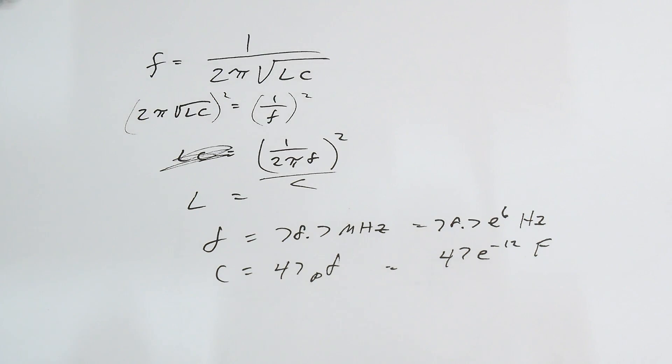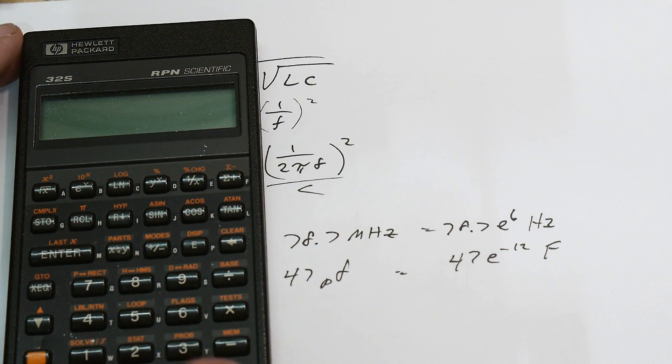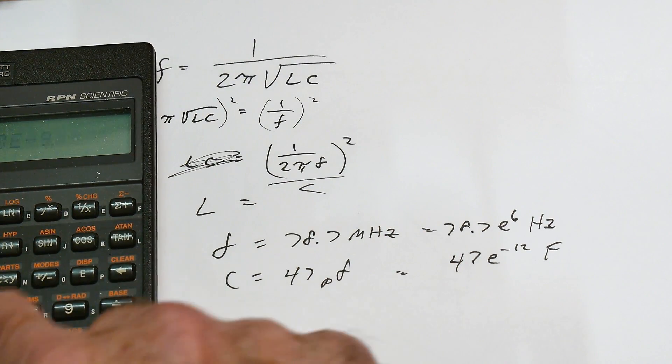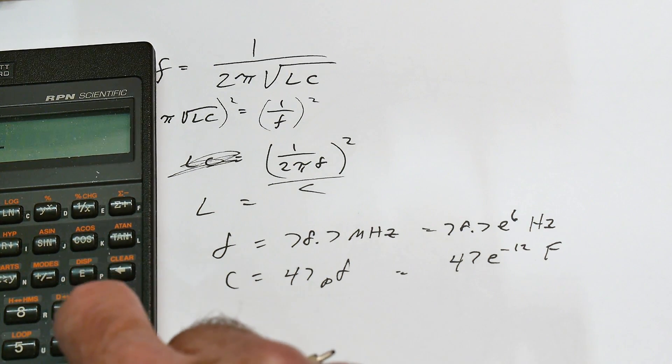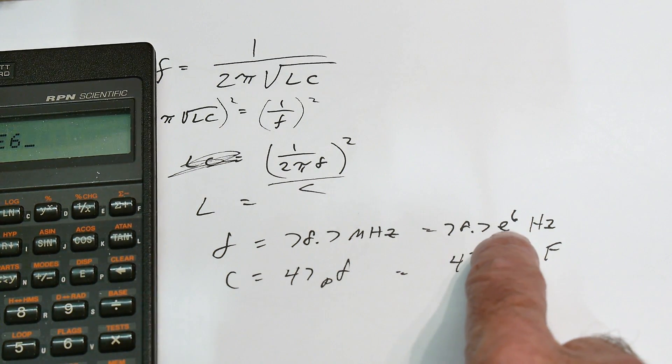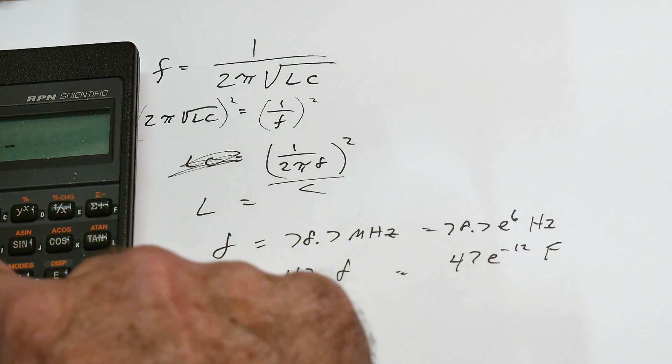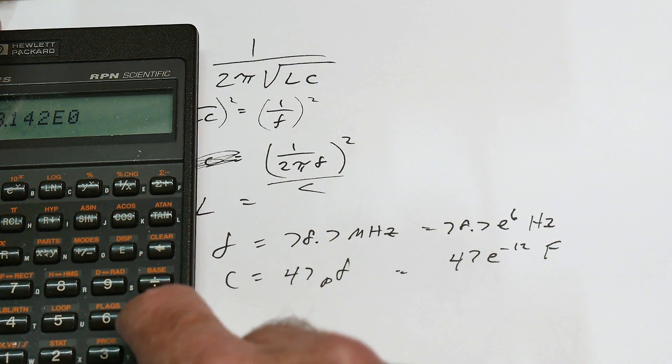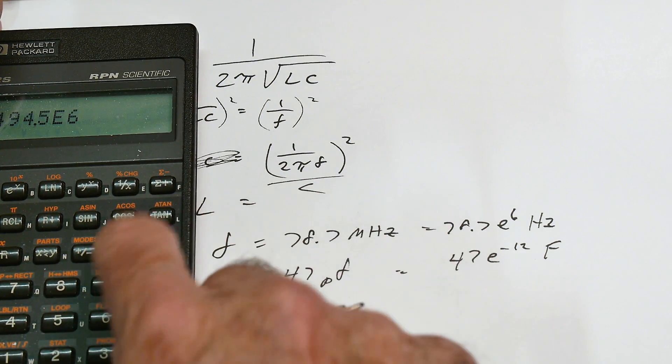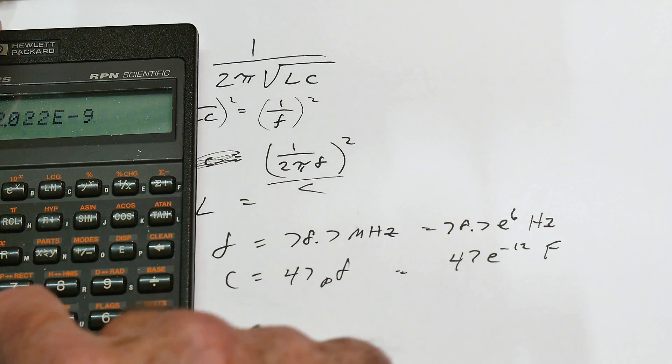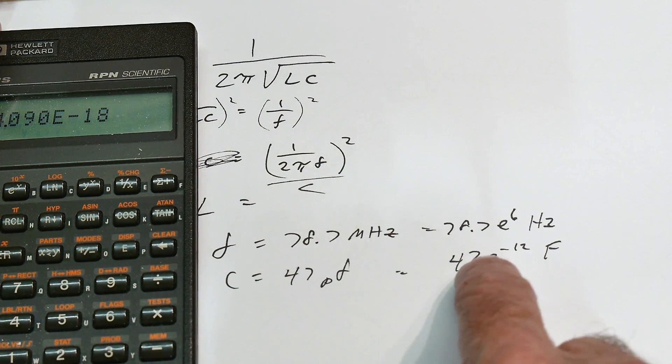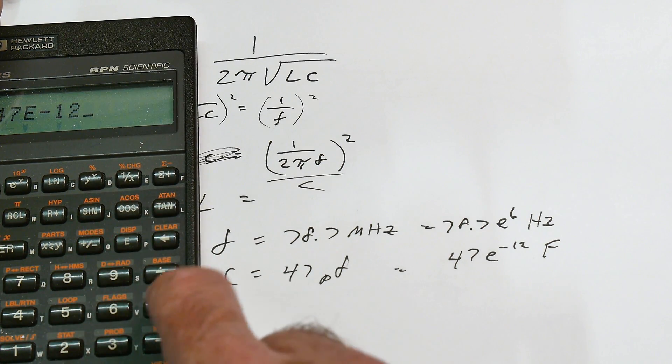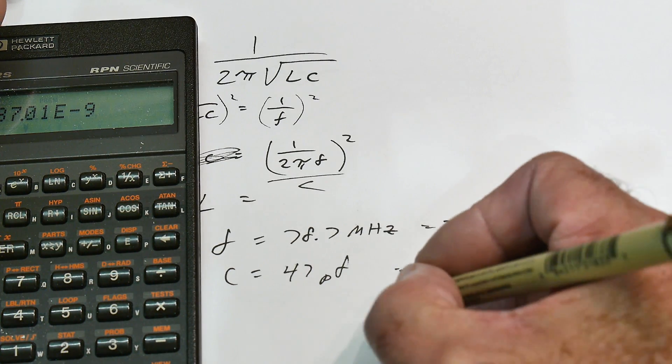Let's see, so we have 78.7 e to the 6. All right, and we want to multiply that by π and multiply that by 2 and take 1 over that and square it. And then we're going to divide that by 47 e to the minus 12 and we get L equals...